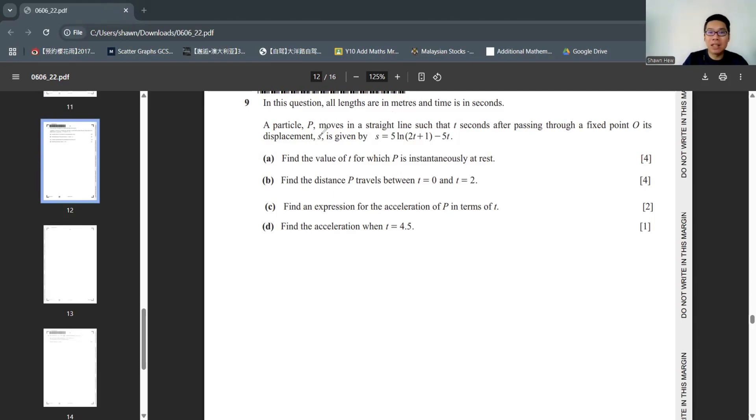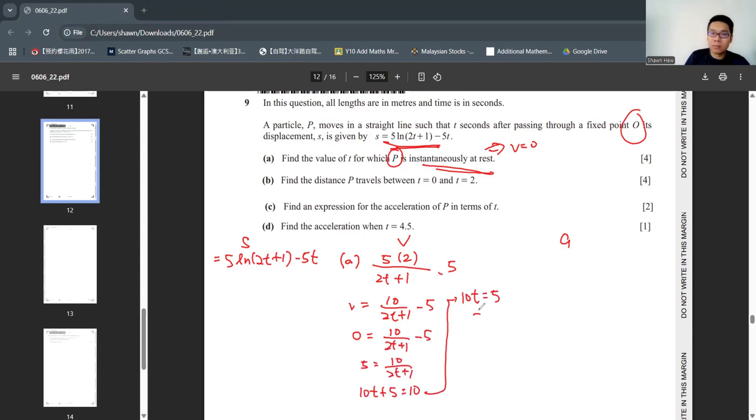Question 9 is about kinematic. They tell you P moves to a straight line. Passes through a fixed point of O. The displacement is given. So every time we see this SVA type question. I will write down SVA information. S is given. For part A they say find the value of T. For which P is instantaneous rest. Instantaneous rest means V equals 0. So we need to find what is V. We need to differentiate. Baby become denominator. Differentiate baby will become 2. Then instantaneous rest means V equals 0. We solve this. T is half. Next. Find the distance traveled between T equals to 0 and T equals to 2. So we just use displacement equation. Why they ask part A first? Because they say instantaneous rest means when time equals to half, they change direction.